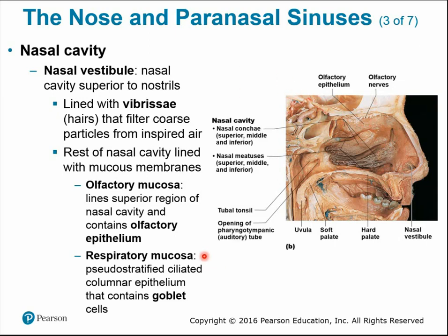The respiratory mucosa is composed of pseudostratified ciliated columnar epithelium — pseudostratified meaning it looks like more than one layer but is really only one layer. The cilia sweep mucus and things down the respiratory tract. This respiratory mucosa contains goblet cells, which are mucus-producing cells. As we learned in anatomy, all open body cavities are lined by mucus membranes to keep them moist, and mucus secretion traps potential pathogens, dust, and particles that enter the body.